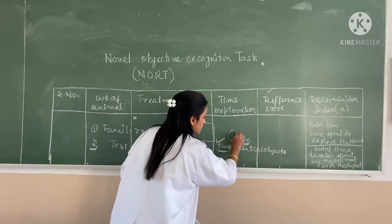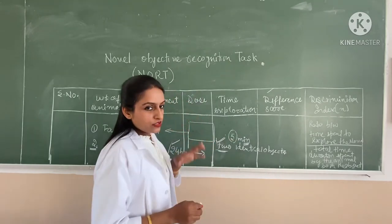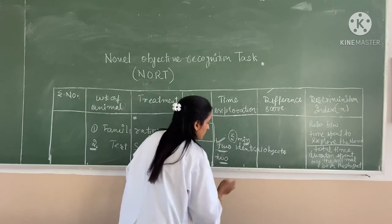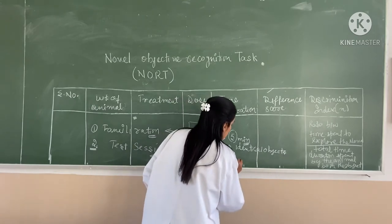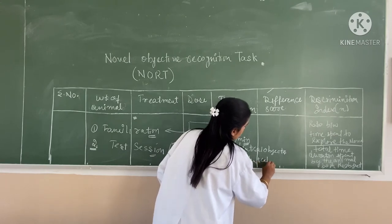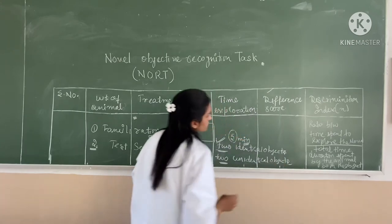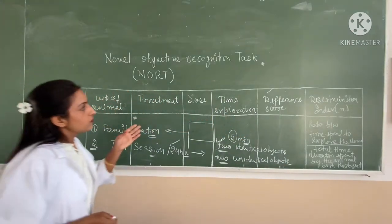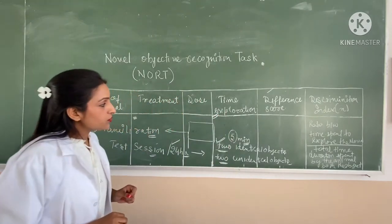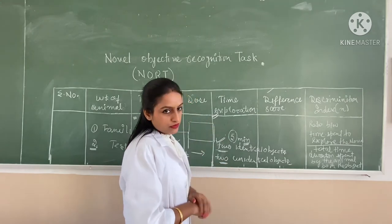After 5 minutes or 10 minutes duration time exploration, we display the animal with two objects. Again, we check the time exploration for the familiar object and the novel object.